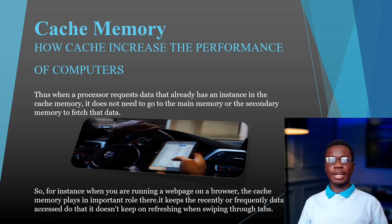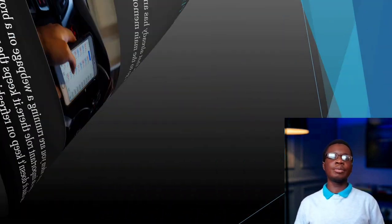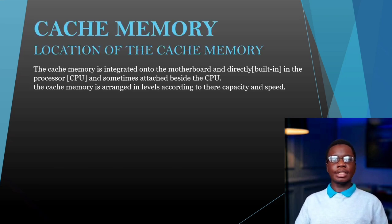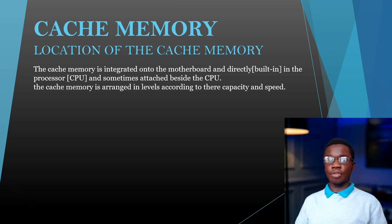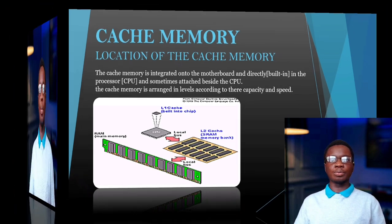The location of cache memory: cache memory is located between the main memory — that's the RAM — and the CPU. Some modern machines have cache memory embedded in the CPU. They come in levels: level 1 and level 2.